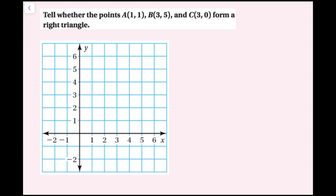For this example, we're going to tell whether the points A(1,1), B(3,5), and C(3,0) form a right triangle. I'm going to plot these points first: A at (1,1), B at (3,5), and C at (3,0). Then I'll draw a triangle connecting them. I can see that side BC is 1, 2, 3, 4, 5 units, so I'll write that in.